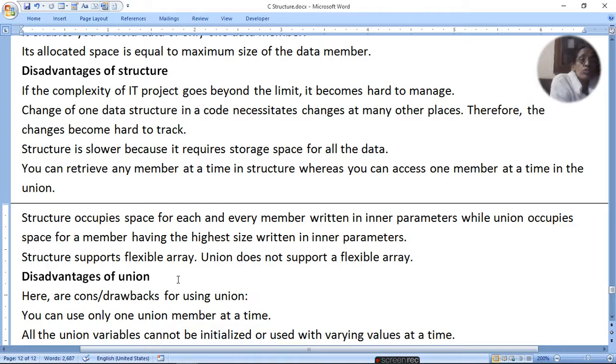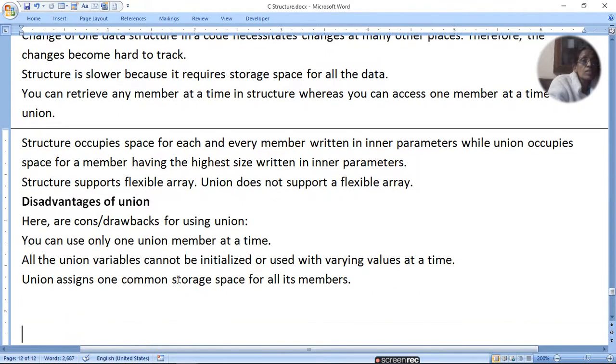The same data structure can be used in multiple places. Disadvantage of union: you can use only one union member at a time. All union variables cannot be used with varying values at a time. Union assigns one common storage space for all its members.